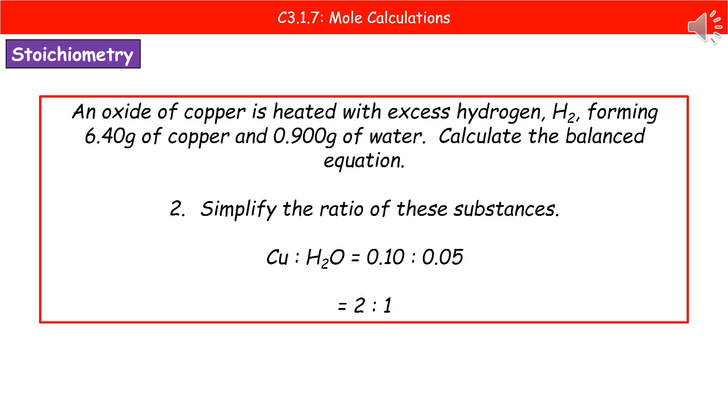The next thing to do is we need to simplify the ratio of those substances. If we look at our ratio of copper to water, we've got 0.10 to 0.05. So if we simplify that down, we're going to have 2 copper to 1 water.